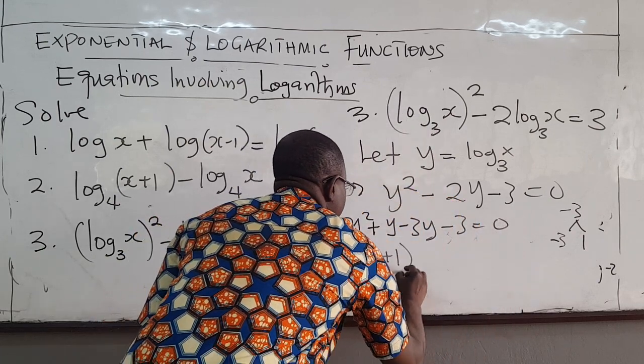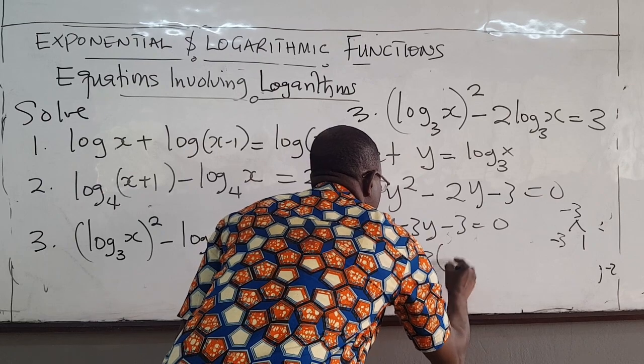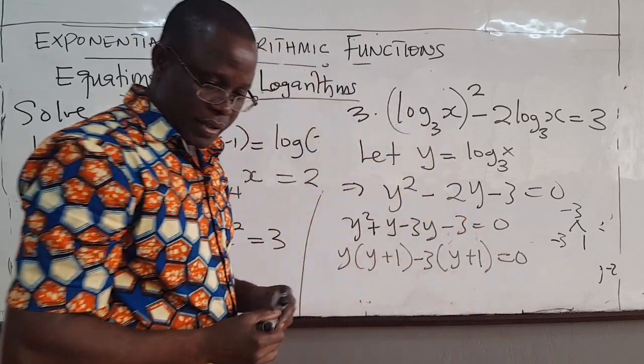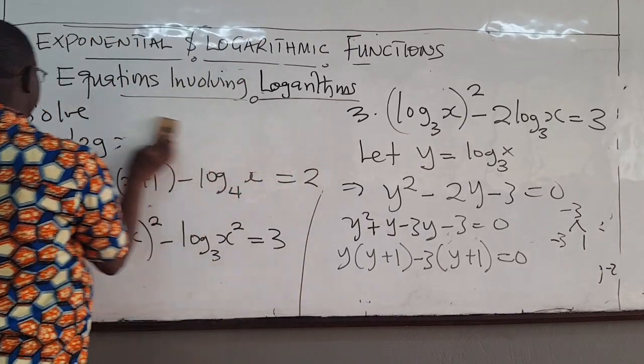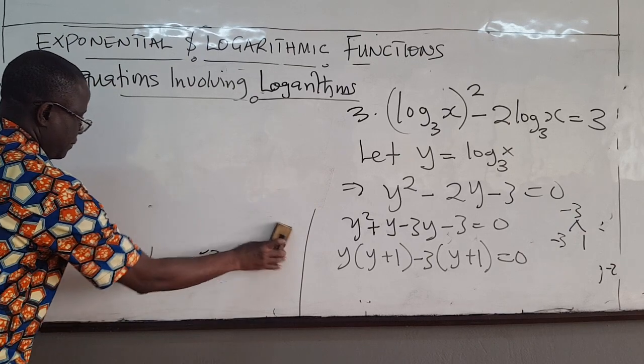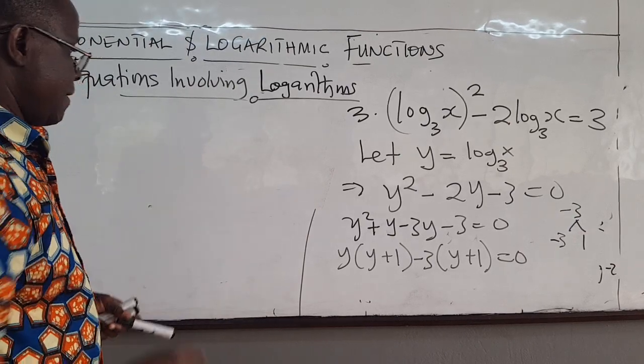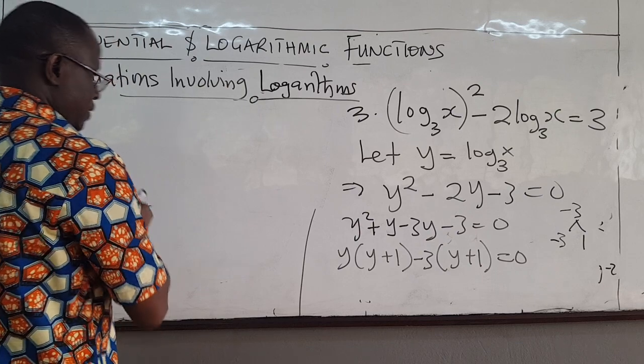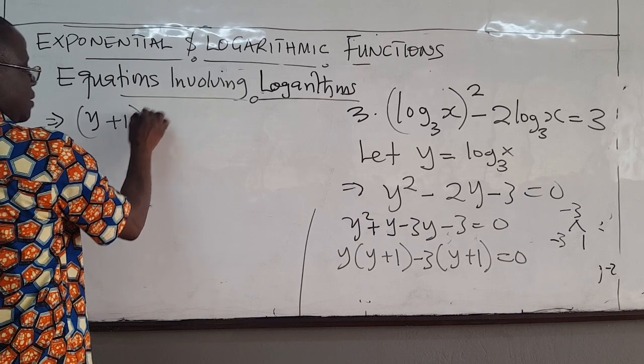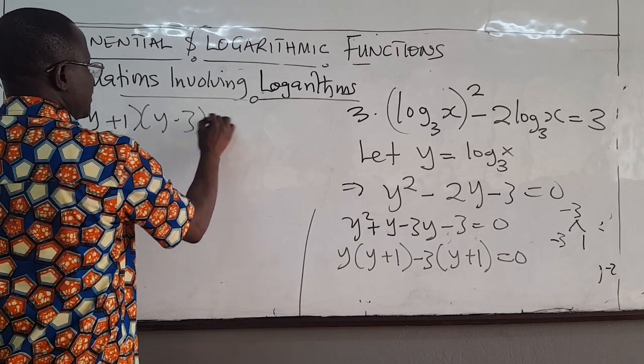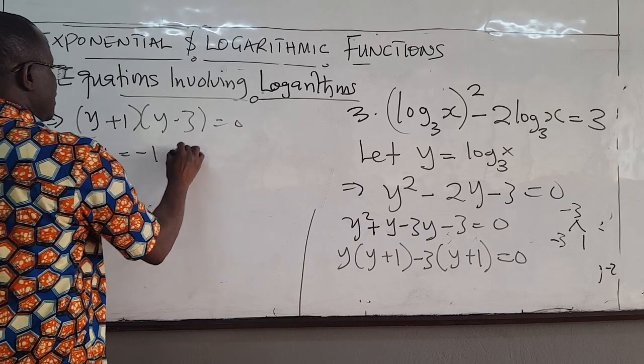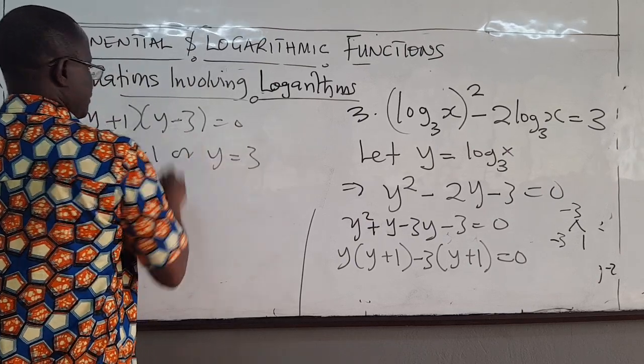Y times y minus 3, pull out 1, y plus 1. This implies that y plus 1 times y minus 3 equals 0, so y is negative 1 or y is equal to 3.